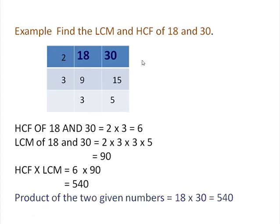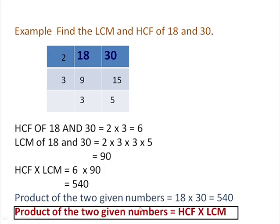Now see the product of the given numbers — 18 and 30. The product of the 2 given numbers is 18 multiplied by 30, which is 540 — 18 threes are 54, and this 0 written at the end gives 540. Now look at both answers: the product of HCF and LCM is 540, and the product of the given numbers is also 540. From this we conclude that the product of the 2 given numbers is equal to HCF multiplied by LCM. Children, using this formula you can solve many examples.